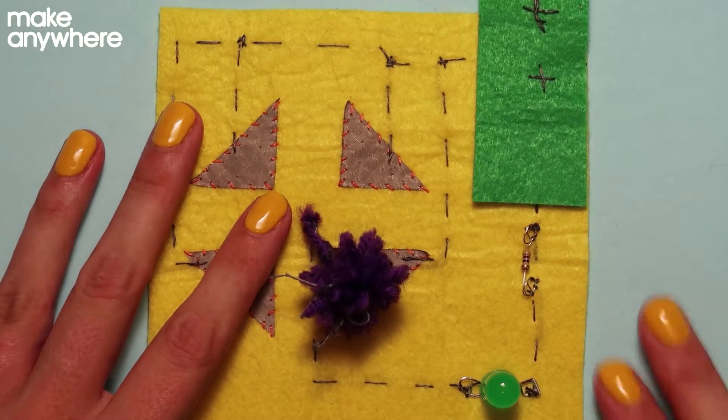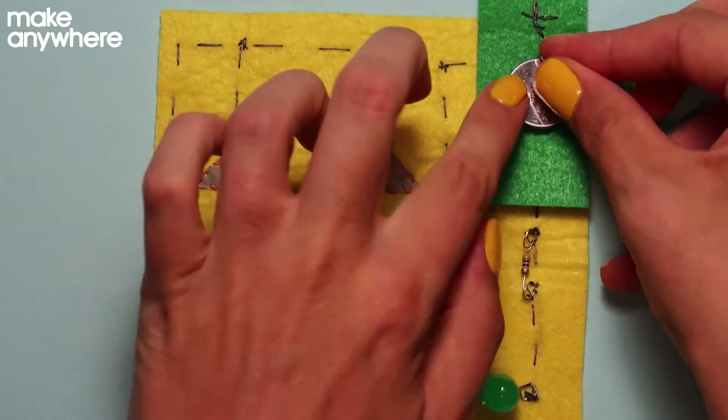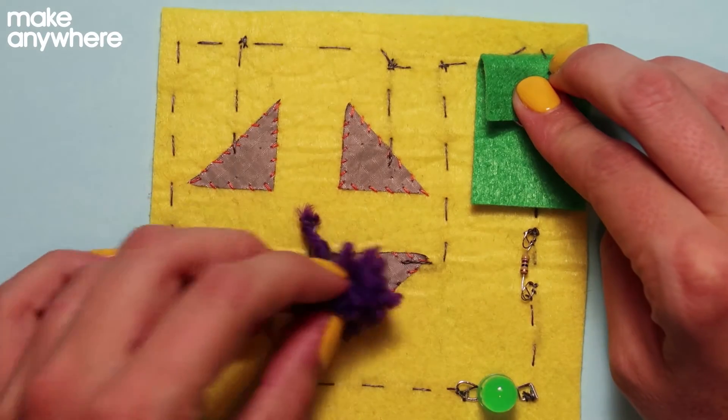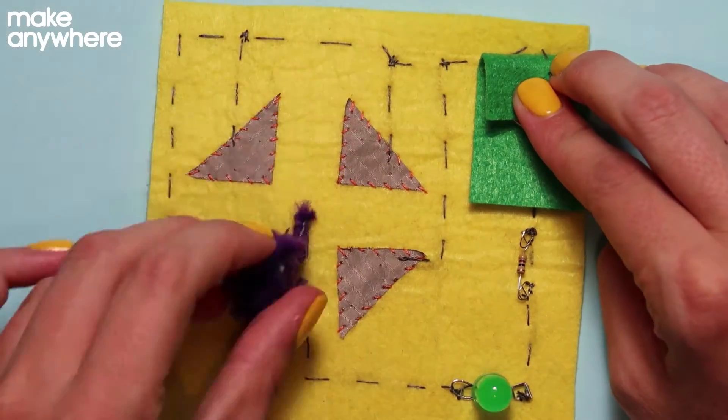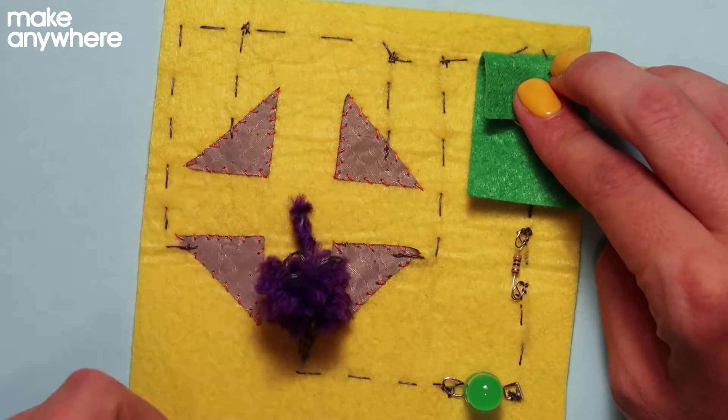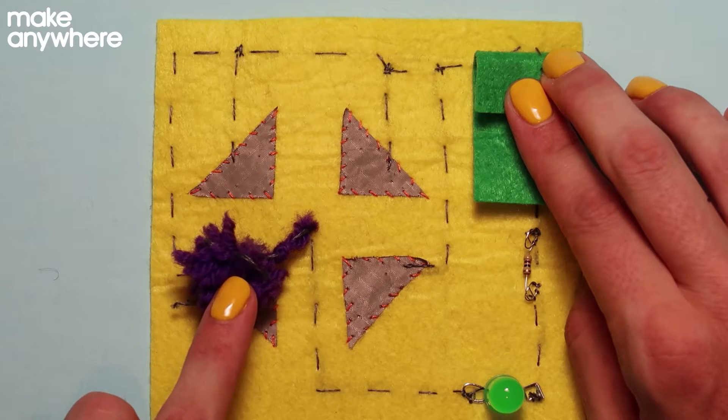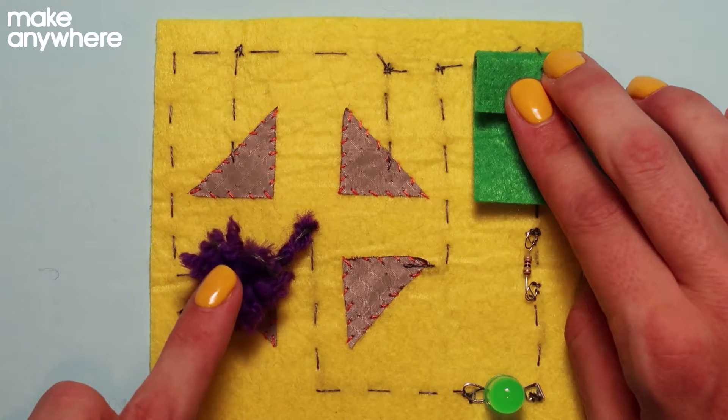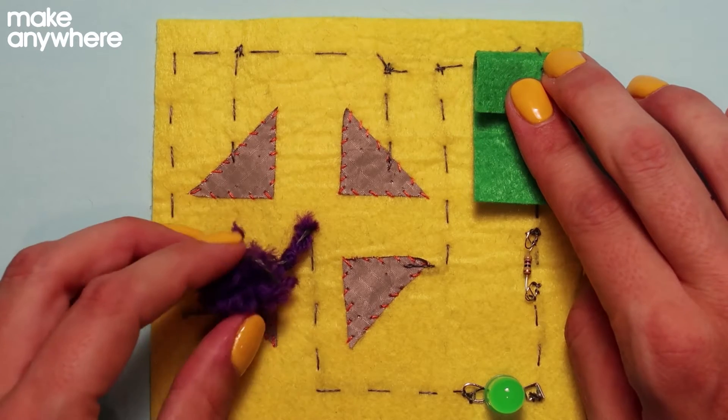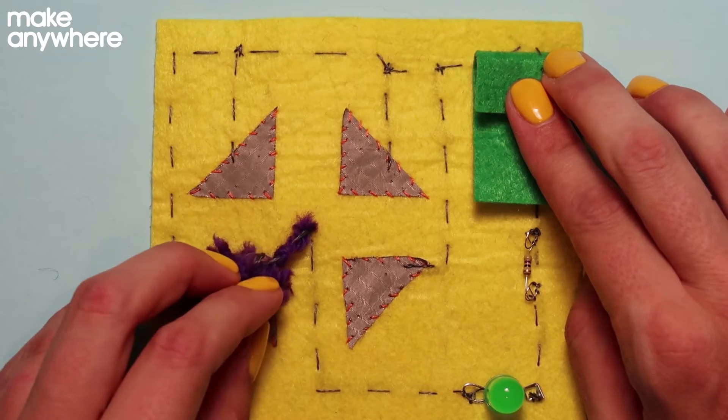So now let's test this out and see if it works. If you find that your LED is flickering even when your pom-pom is still, you might want to add a bit more conductive thread to your pom-pom so that it makes a nice strong connection.